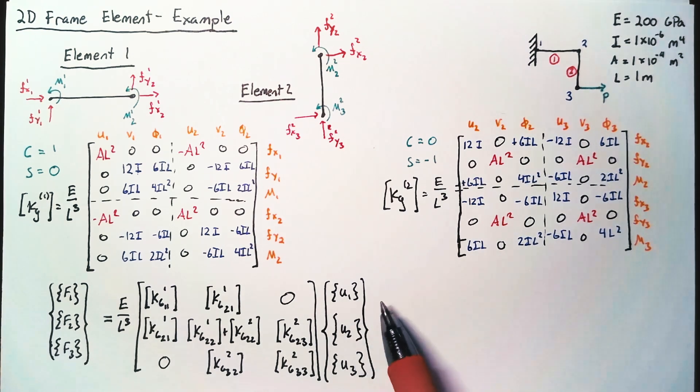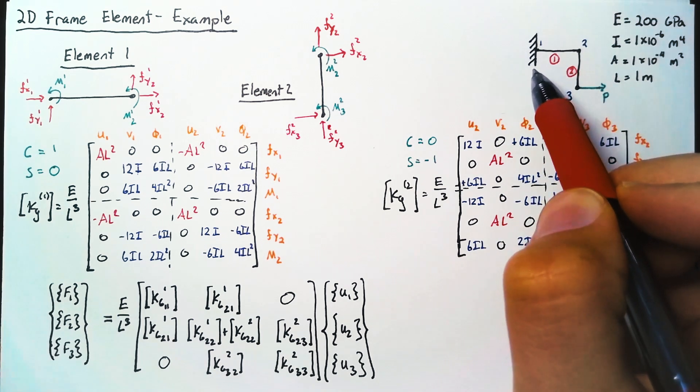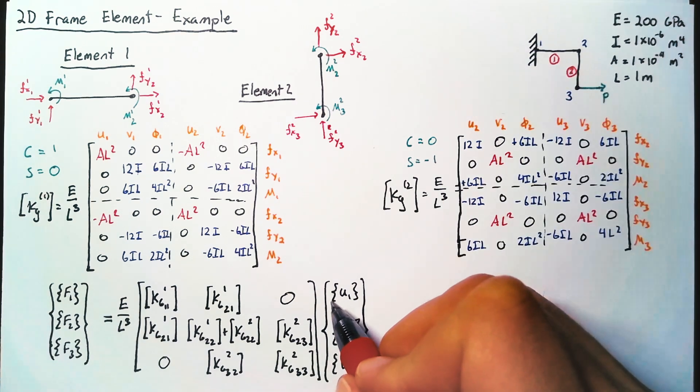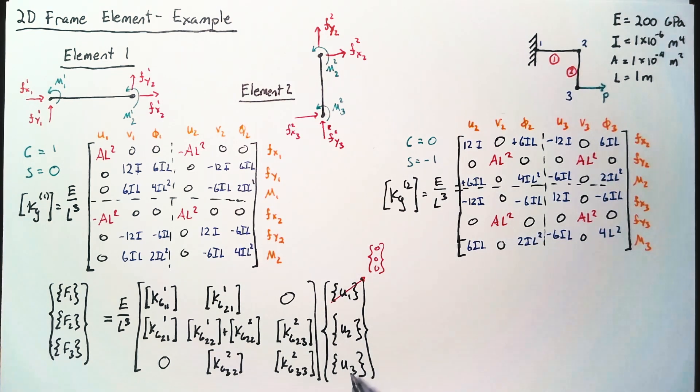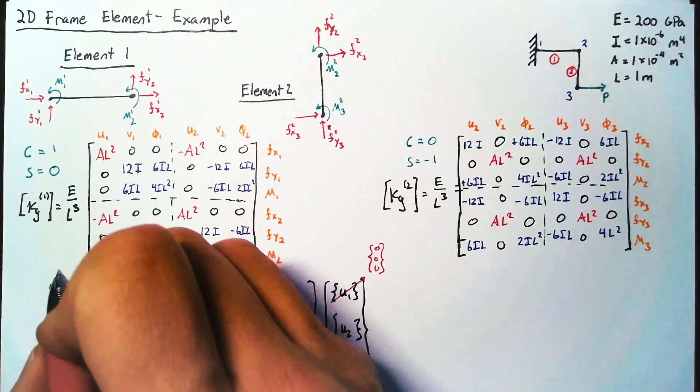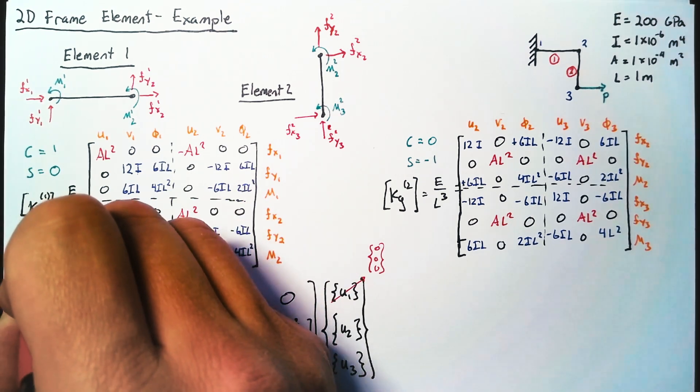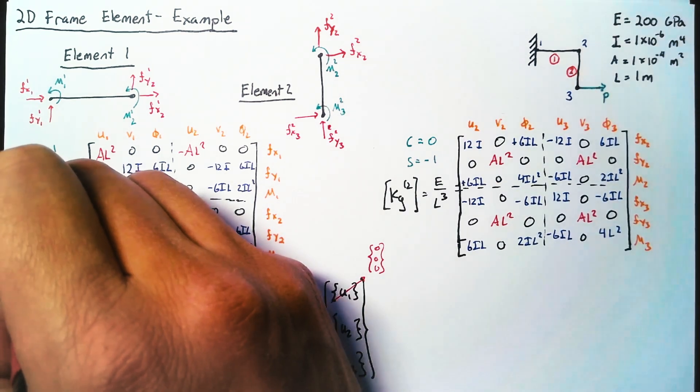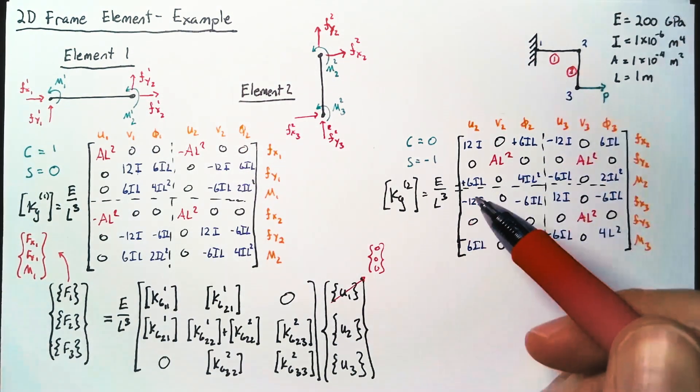All right. Applying our boundary conditions. We know that node 1 here is clamped to the wall. And so it's not going to have displacements in x, y, or in our rotation. And so we can just set this to a zero vector. U2 and U3 need to be left alone because those can move in all three ways. Now, the force that we have on node 1 is going to be composed of the three reaction forces of the wall. So I'm going to call this fx1, fy1, and m1. But I'm referring to those reaction forces, which are unknowns at this point.